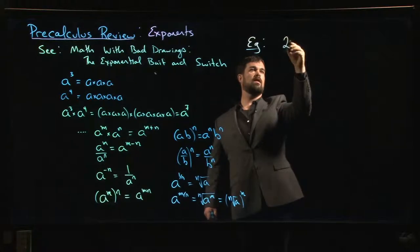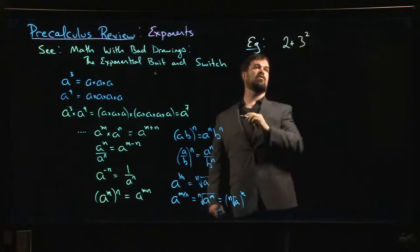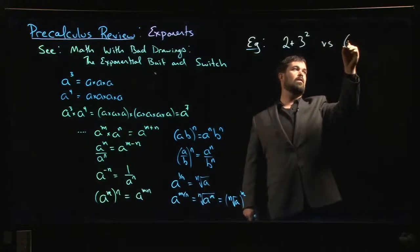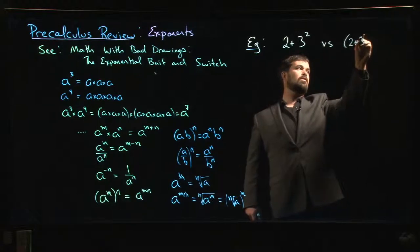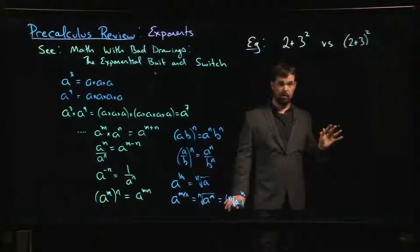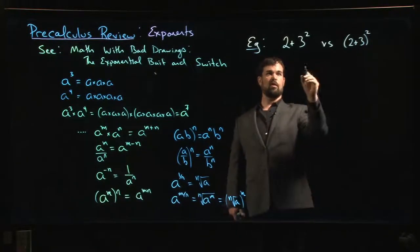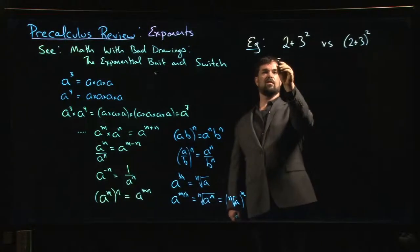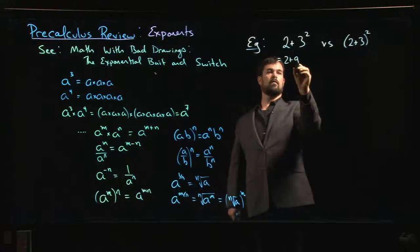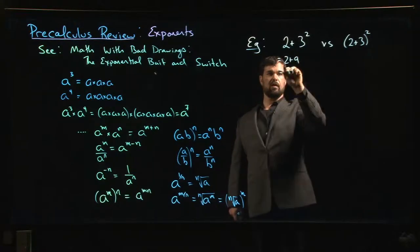One is to think about, you know, if I had like 2 + 3² versus say (2 + 3)²—these are not the same thing, right? Because order of operations says that we should always do the exponent first. This one is 2 + 9, which is 11, because you apply the square first and then you add 2.